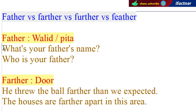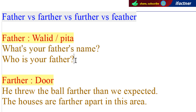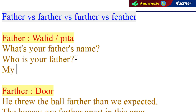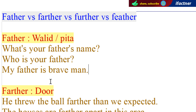Yehaan peh hum nay pehla sentence banaya: What's your father's name? Aapke abbu ka naam kia hai, aapke pita ka naam kia hai. Iske alawa aap keh saktay hain: Who is your father? Aapke walid koon hain, aapke pita koon hain? Aur ek aur sentence banatay hain: My father is a brave man — mayre walid, mayre pita jo hain, woh behaadur aadmi hain.